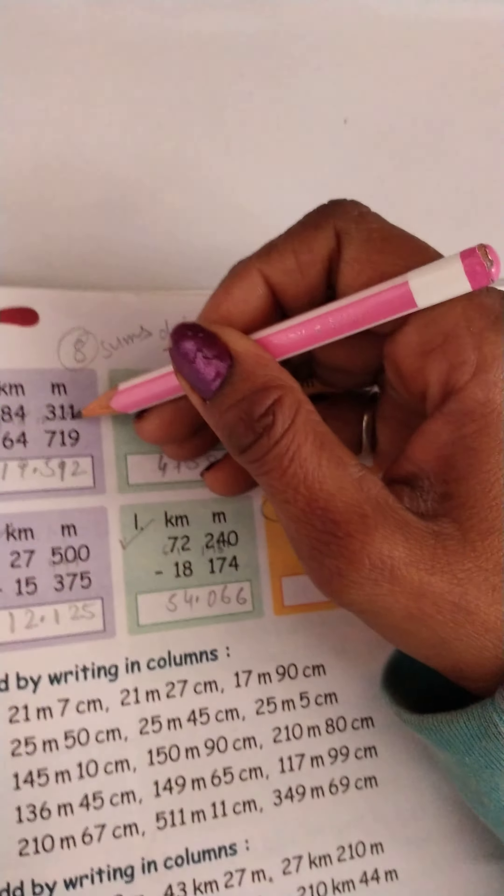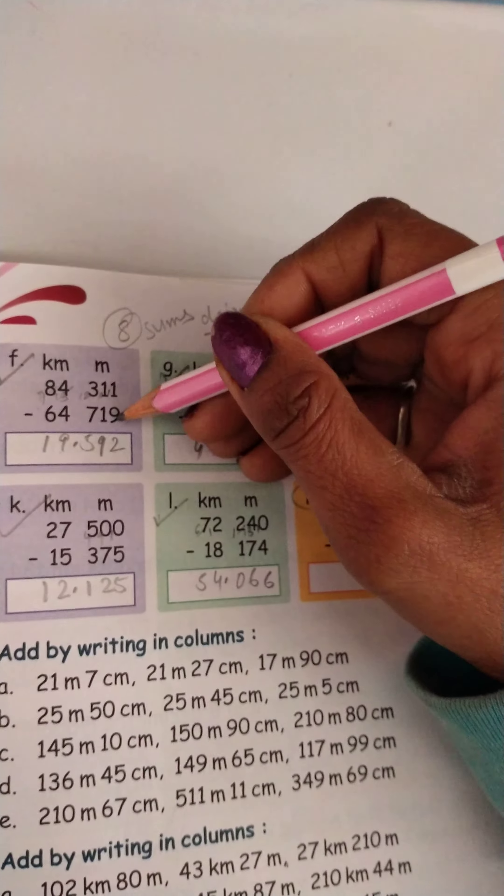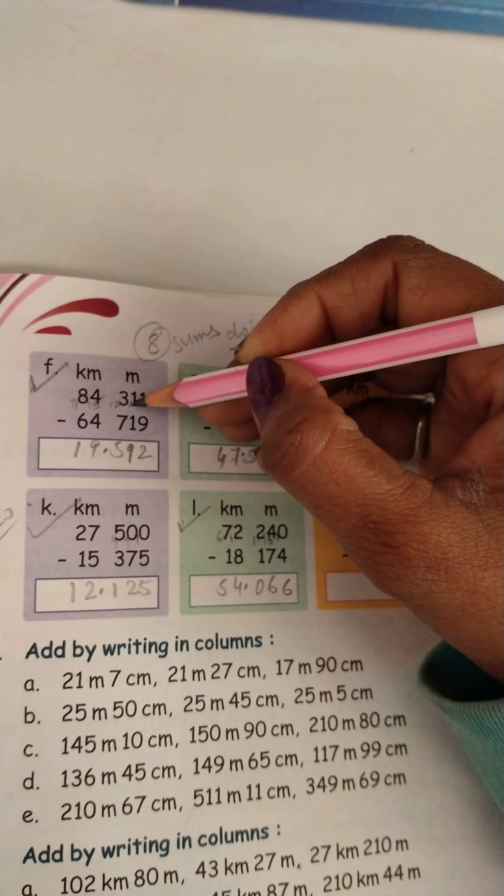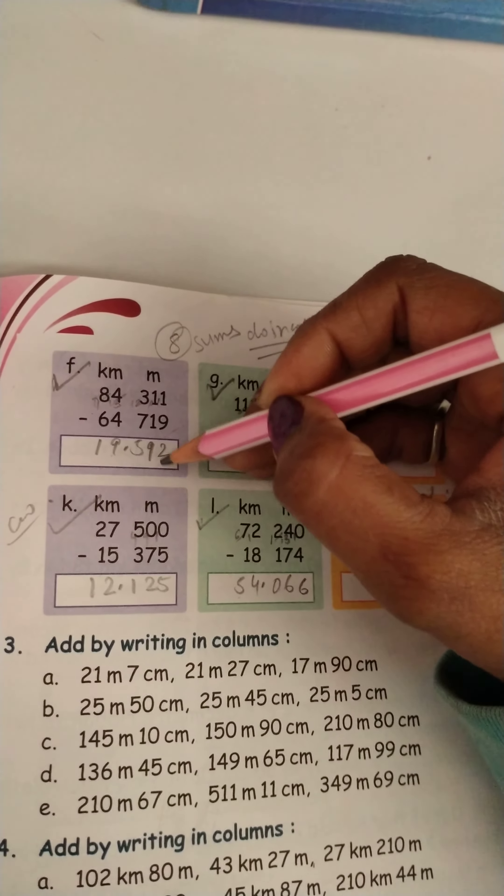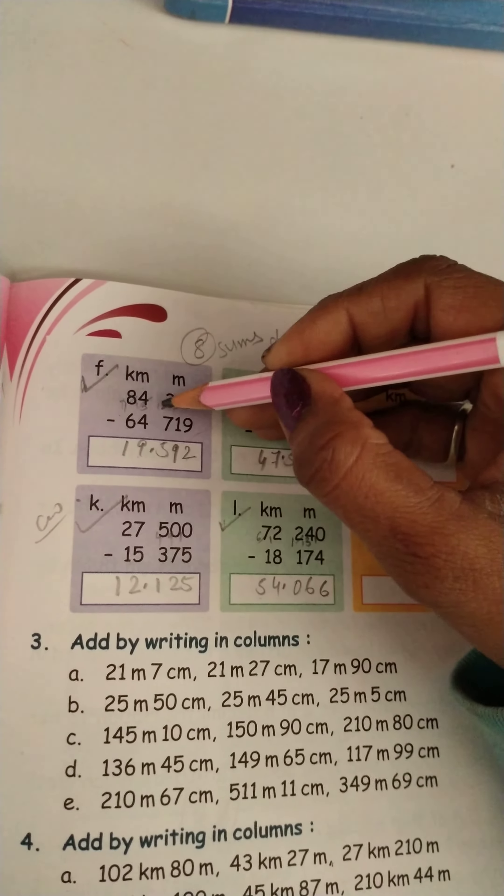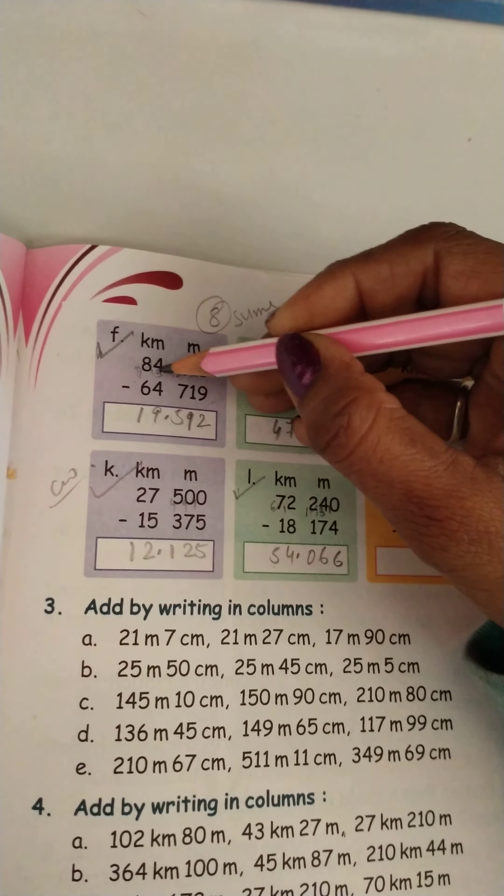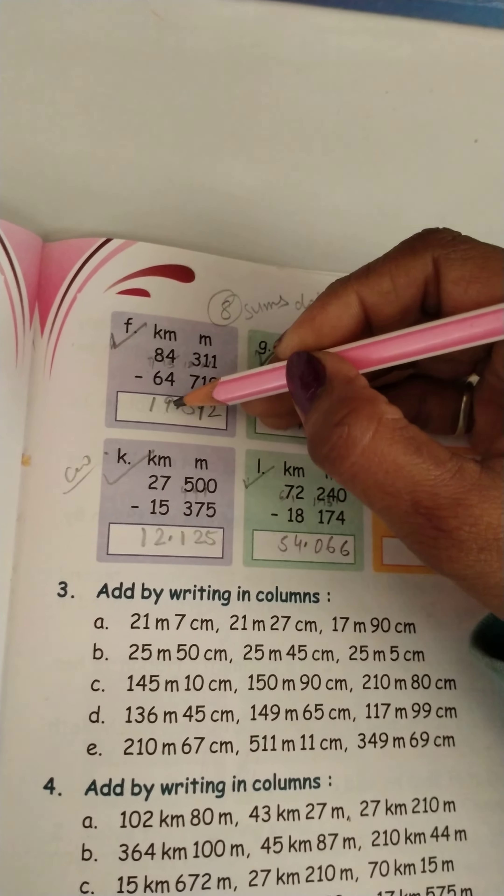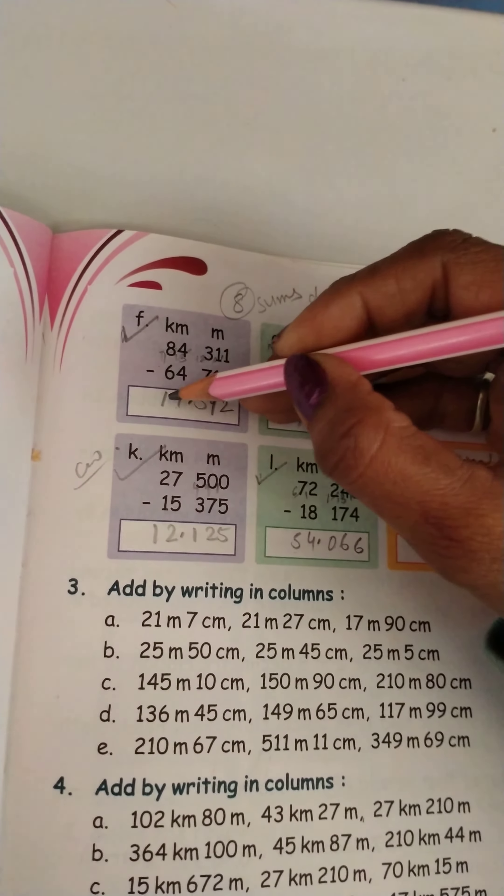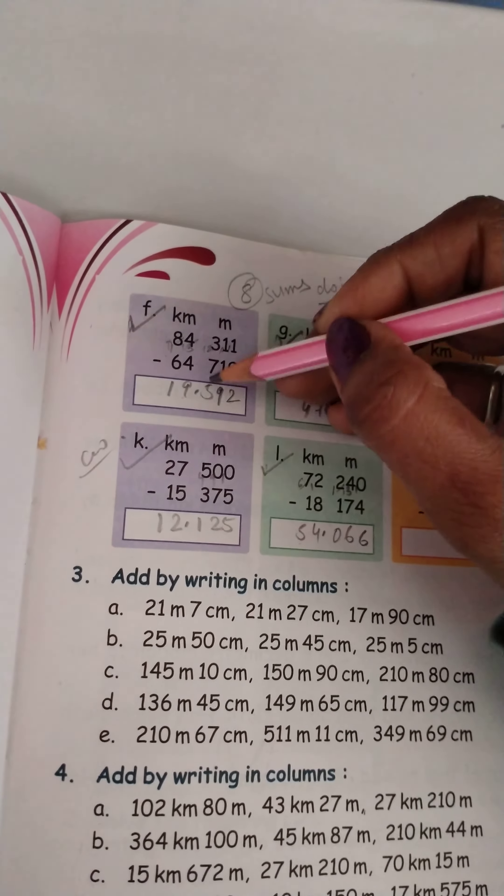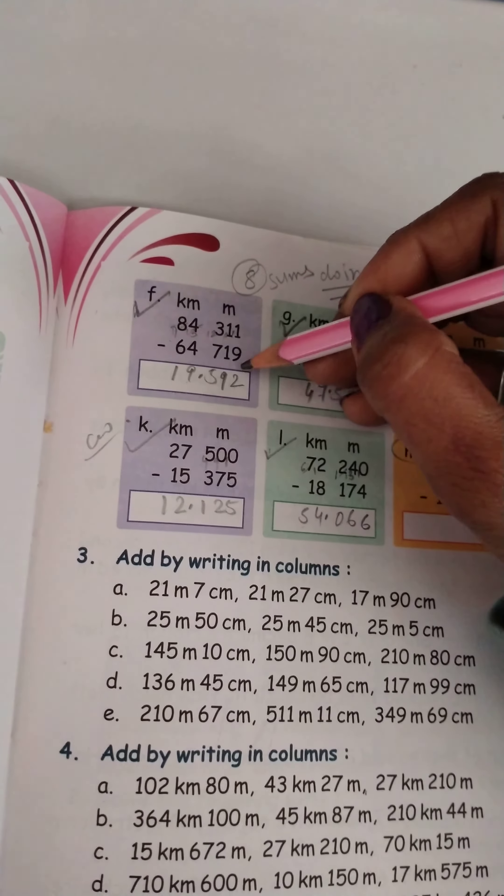E, you will have in your book. Let's do this. Next one is 11. 11 minus 9 is equal to 2. 10 minus 1 is equal to 9. Here we have 12. 12 minus 7 is equal to 5. Here we have 13. 13 minus 4 is equal to 9. 7 minus 6 is equal to 1. Answer is 19 kilometers 592 meters.